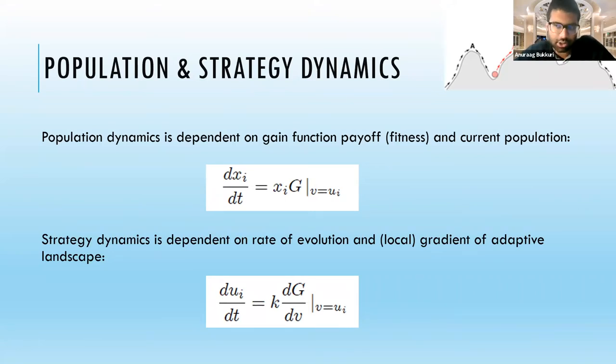The strategy dynamics of U, which is our trait under consideration, depends on the local gradient of the G-function, which is the dG/dv term, which describes how the fitness generating function changes due to some perturbation in the trait value. It also depends on the rate at which species can scale this fitness gradient, which is K or our evolvability.